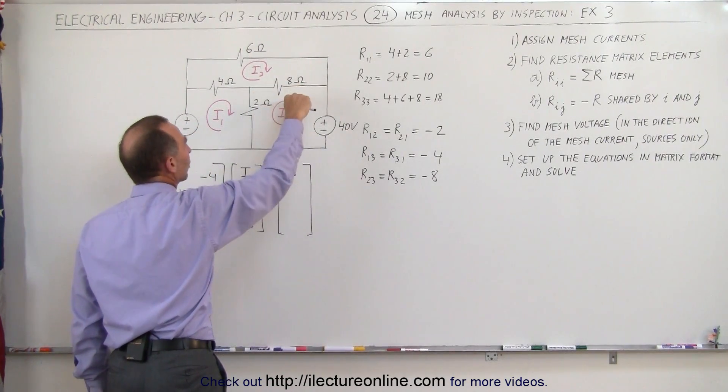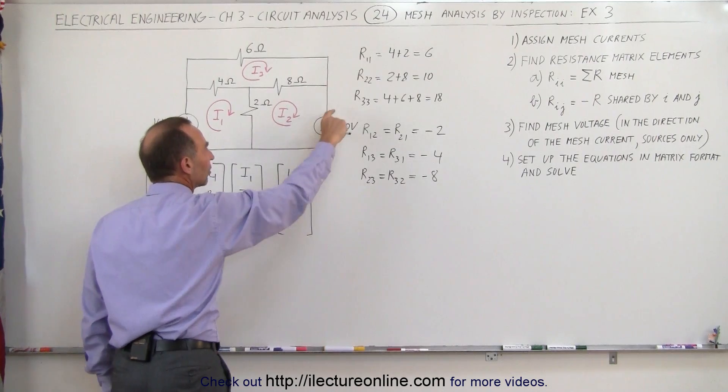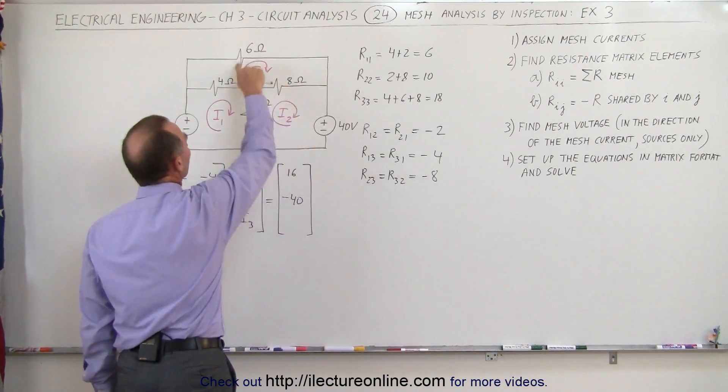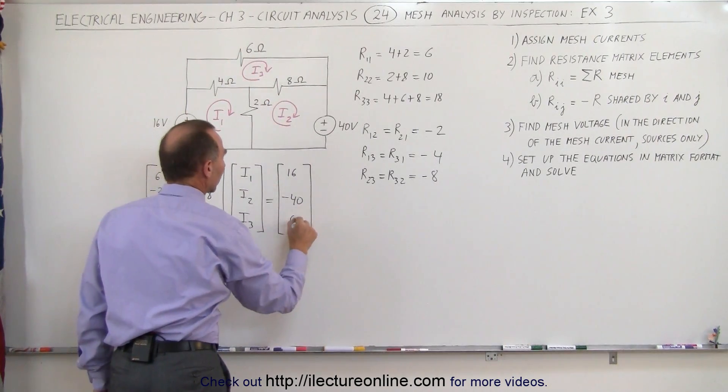Around the second mesh, notice we're going in the opposite direction as the voltage source from the positive to negative. That's minus 40. And finally for the third one, there's no voltage sources there. So it gives us a zero.